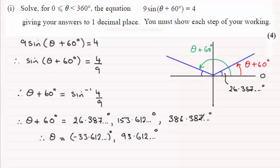When we take 60 degrees off this to get theta, we end up back in the range. We get 326.387 and so on. And so do take care to watch out for that idea where you might have to step outside your range.